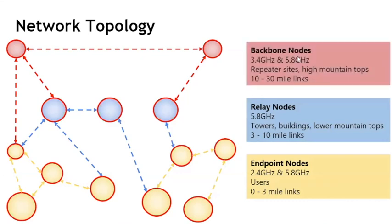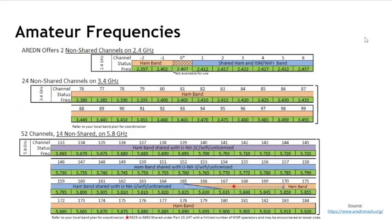Finally, there are backbone nodes — usually at repeater sites and high mountaintops — covering 10 to 30 mile links. One of our operators is connected from Sierra Madre all the way to Pleasant Peak, which is a 38-mile hop using 3.4 GHz. Right now, 3.4 GHz is extremely quiet because it used to be a radar frequency that has fallen into disuse, so amateur radio is pretty much the only thing on there. That's about to change sometime next year, so be aware. But if you have 3.4 GHz, it's extremely quiet and extremely fast because there's no noise.